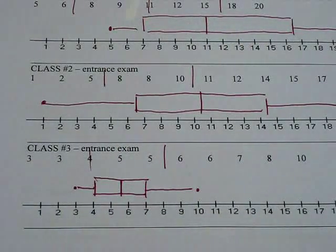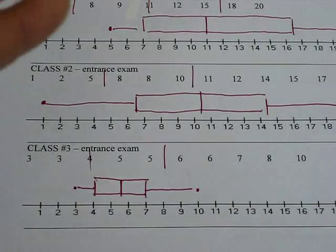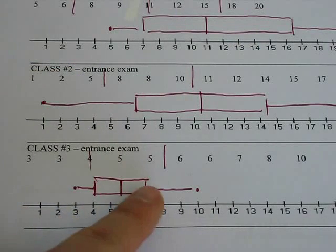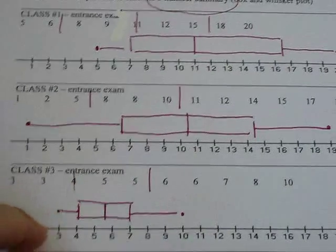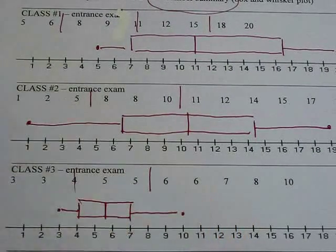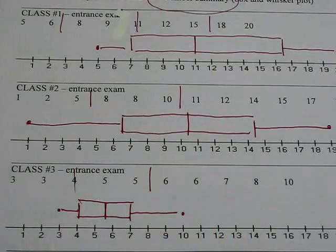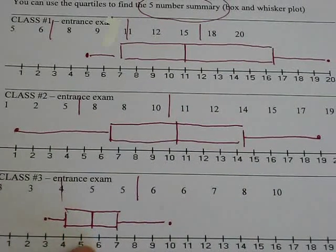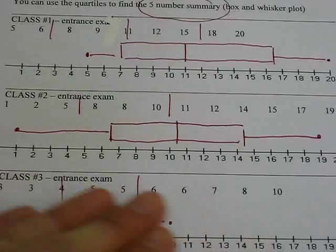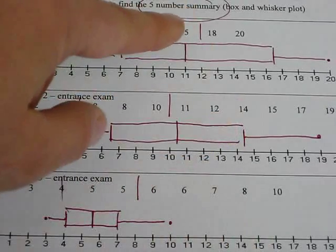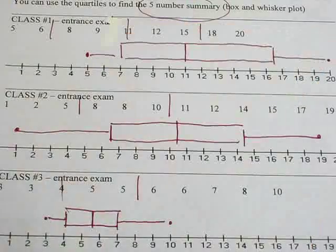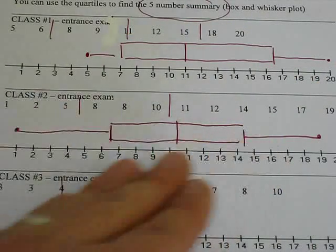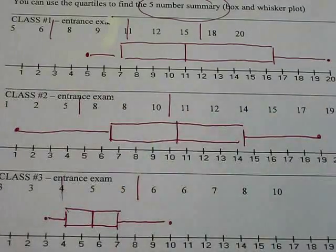Alright, that right there is our last box and whisker plot. You'll notice that that middle 50% of the class is very small compared to the other two. And also, you'll notice the max and min are also pretty close to it, too. So, class number 3 had a lot of very small distribution, very little variation, where class 1 had the widest IQR, and class 2 had a smaller IQR, or middle 50%, but wider max and min.